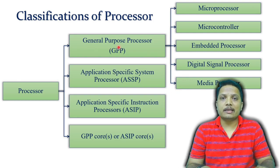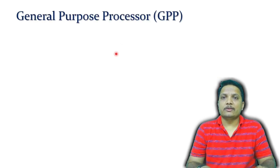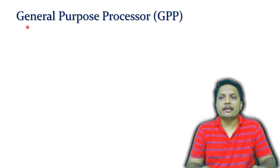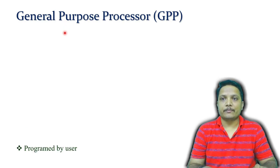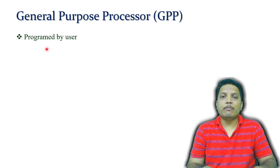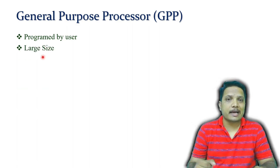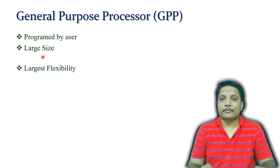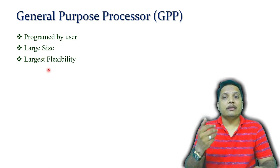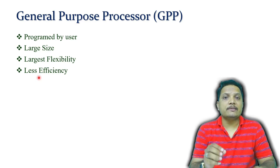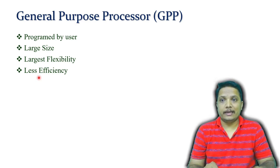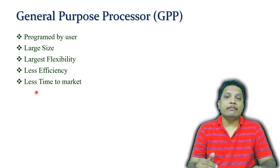Let us see what a General Purpose Processor is. These processors are designed for general purpose — like our computers have general purpose processors. They are programmed by the user, have a large size, and have large flexibility where many programs can run. However, they have less efficiency with respect to a particular task, and take less time to market. They have lower cost compared to application-specific processors but higher power consumption, giving average performance for large applications. These processors are not suitable for real-time applications.